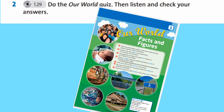Track 1.29. Vocabulary Exercise 2. Our World Facts and Figures. 1: There are 7 billion people in the world — there are more boys and men. 2: There are 40 new babies in the world every 10 seconds. 3: The population of Tokyo, the capital city of Japan, is 13 million.